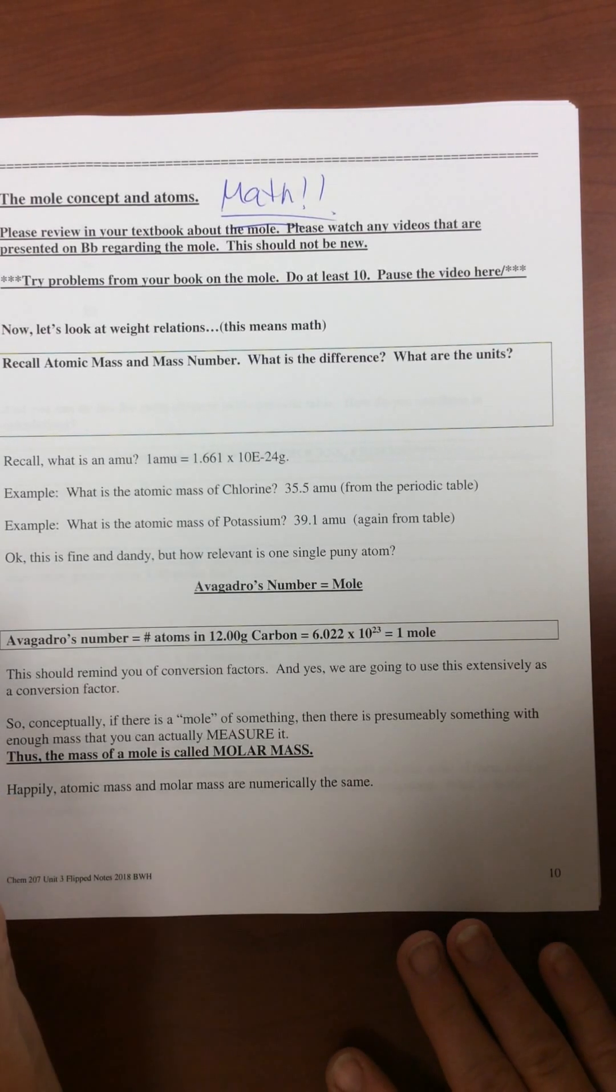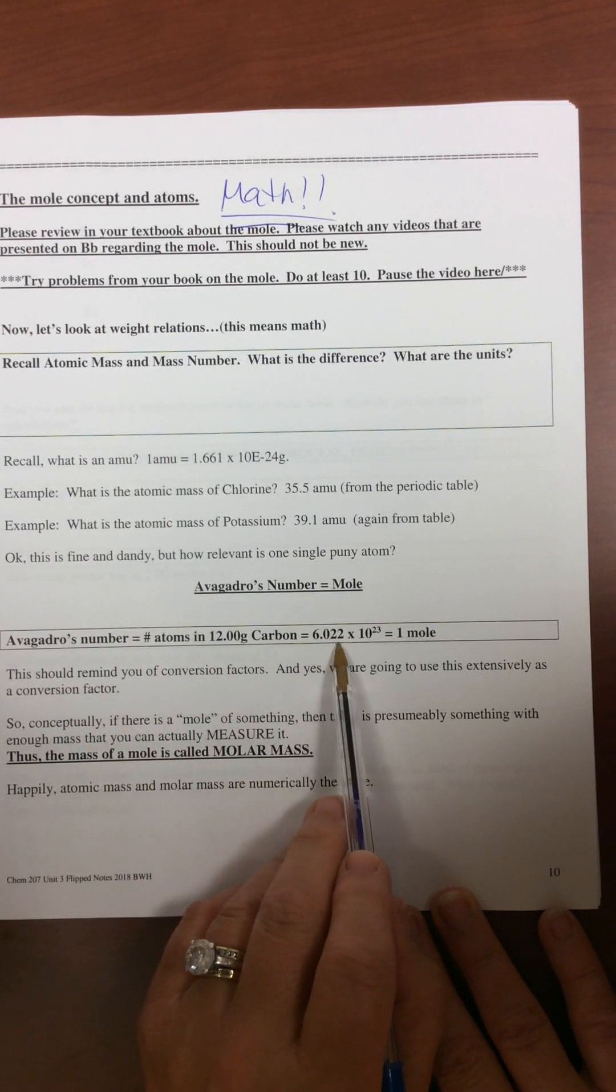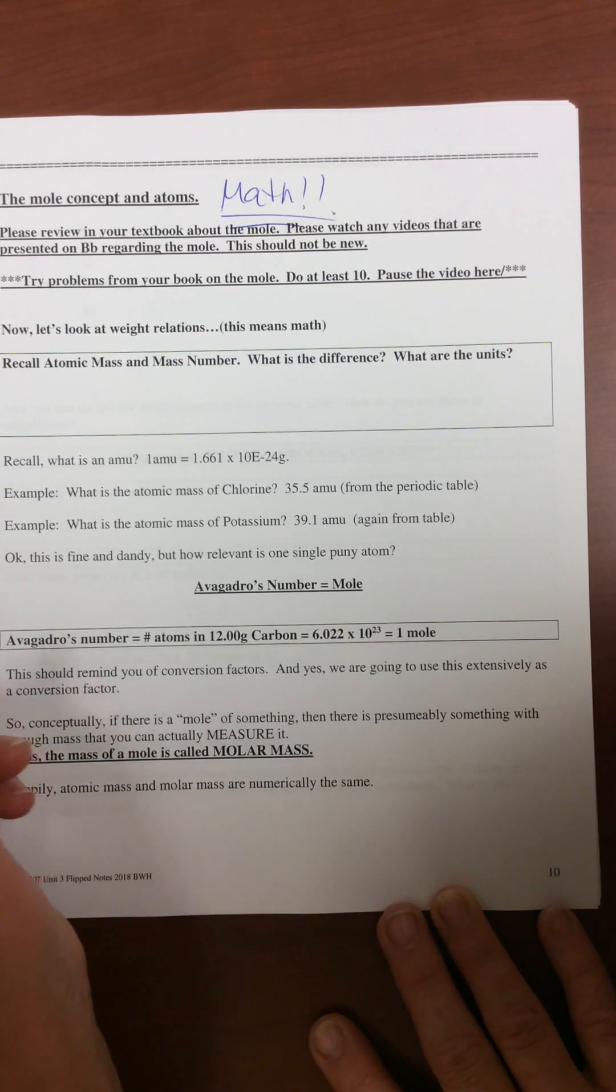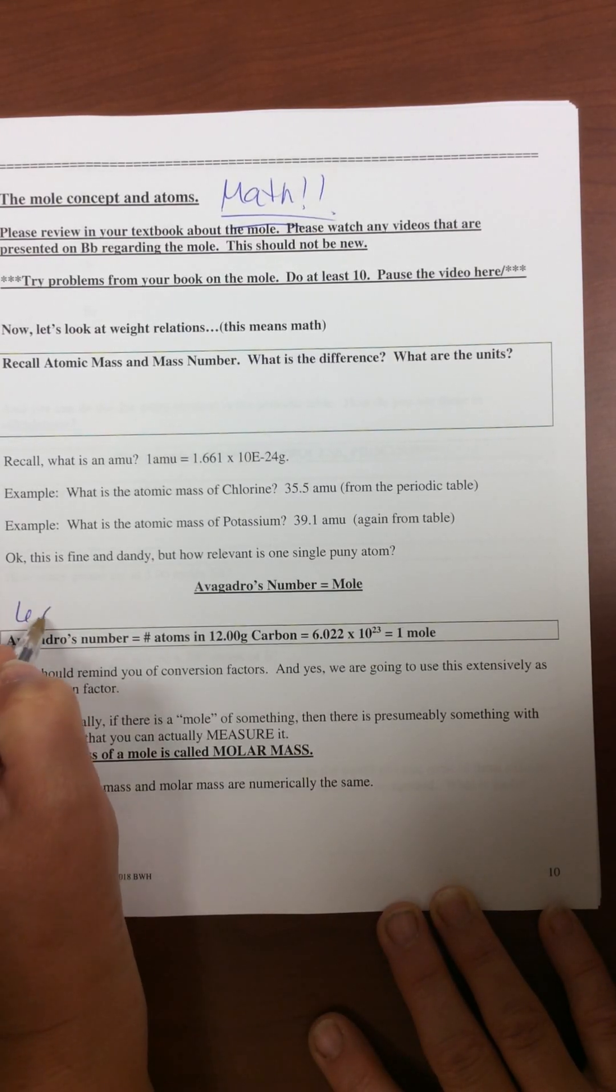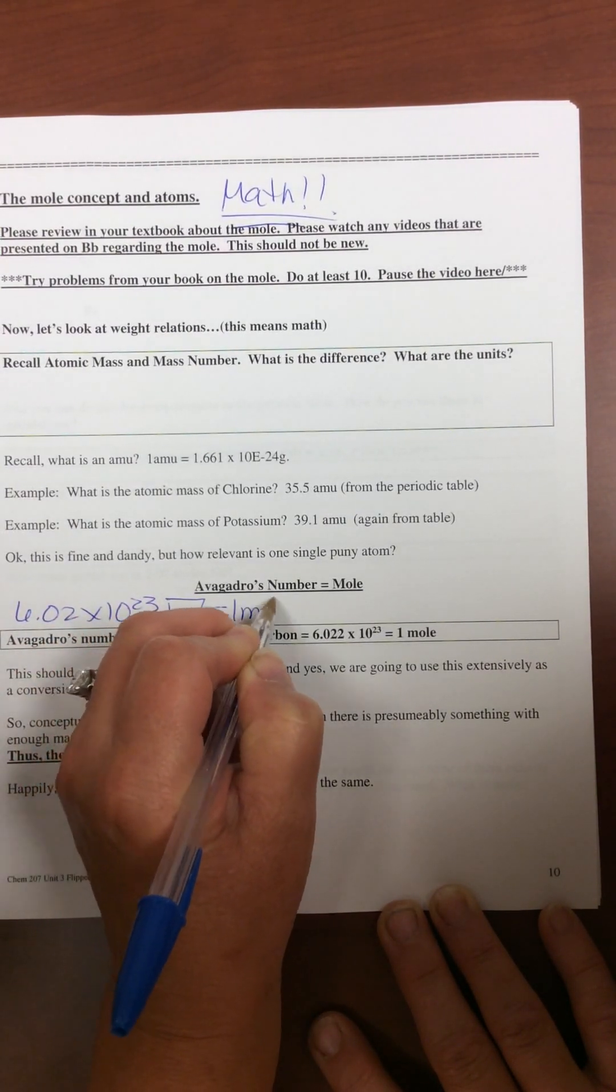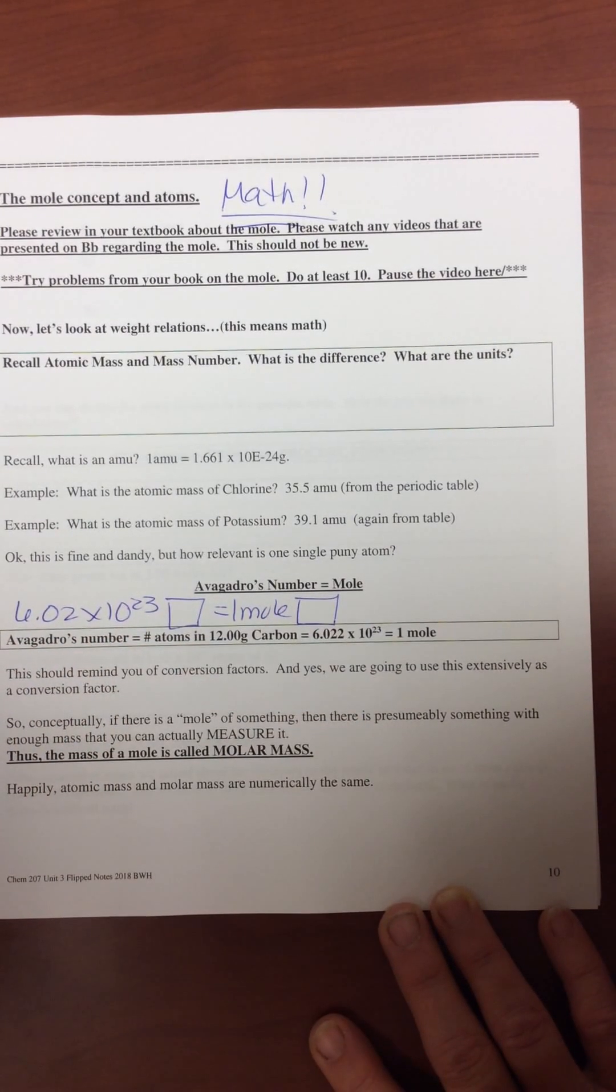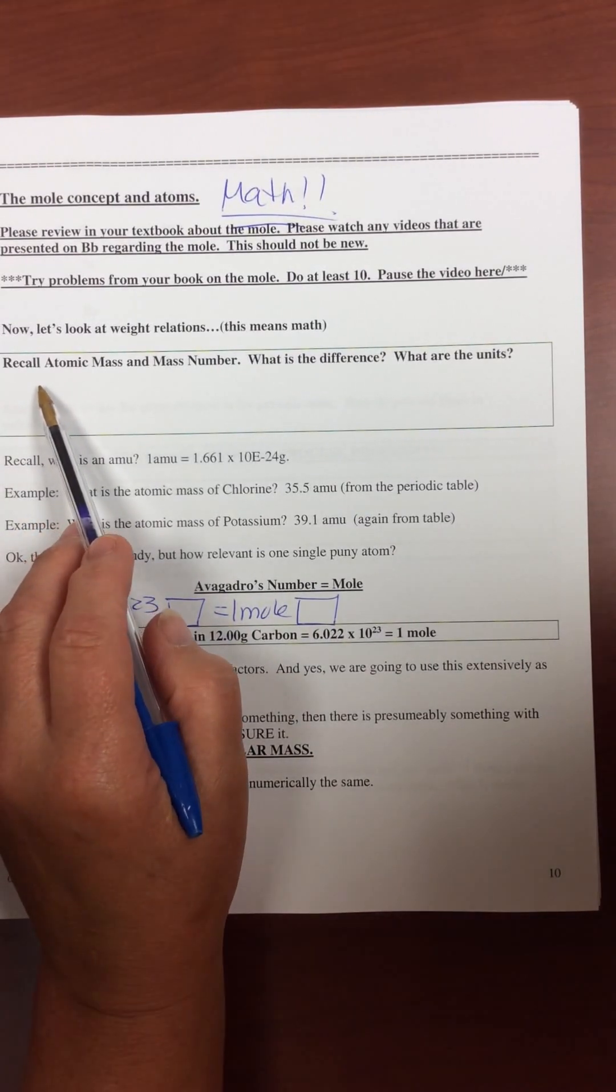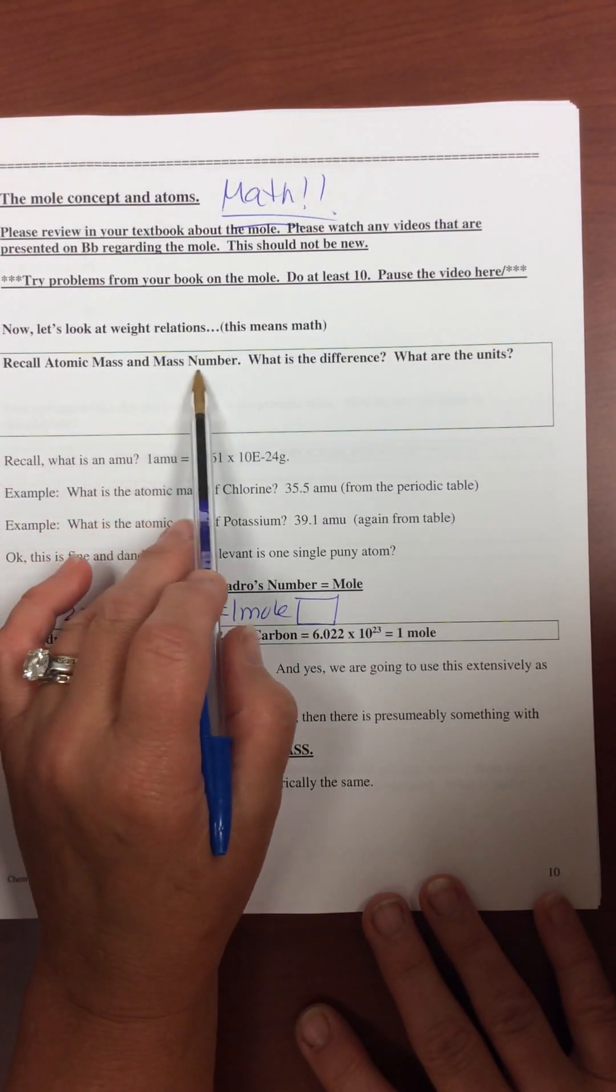So mole is 6.022 times 10 to the 23rd and usually and typically I round it off to just 6.02 times 10 to the 23rd whatever equals 1 mole of whatever. And this brings us back to the idea of atomic mass and mass number.